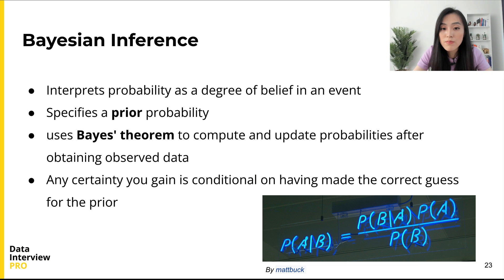such as personal beliefs or assumptions about the event, or the results of previous experiments. It uses Bayes' theorem to compute and update probabilities after obtaining observed data. Any certainty you gain is conditioned on having made the correct guess for the prior.